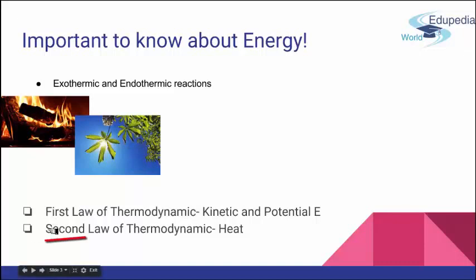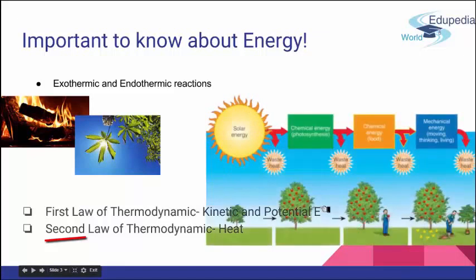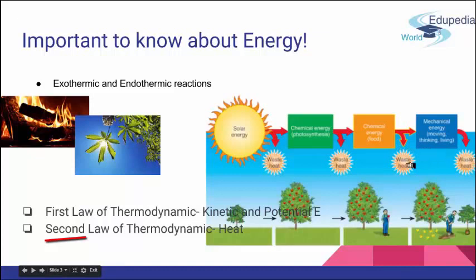The second law of thermodynamics states that whatever is happening with any kind of reaction — chemical, physical, or otherwise — there is always so-called waste heat. Whatever reaction is occurring, some part of energy is leaving the system as heat that goes back to the atmosphere. These two laws explain everything we need to know about energy drives on our planet.